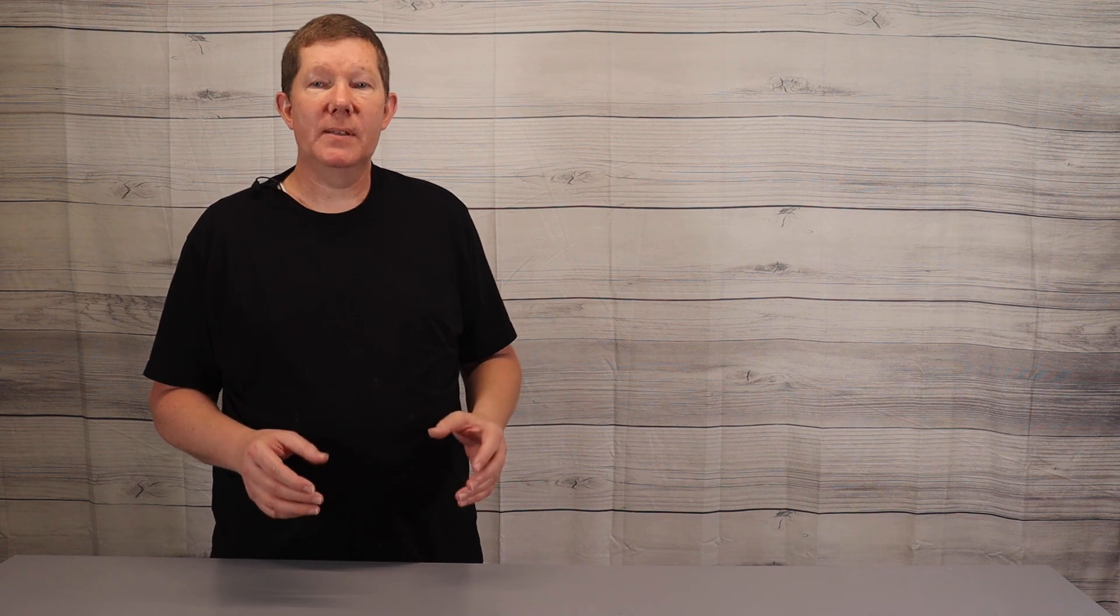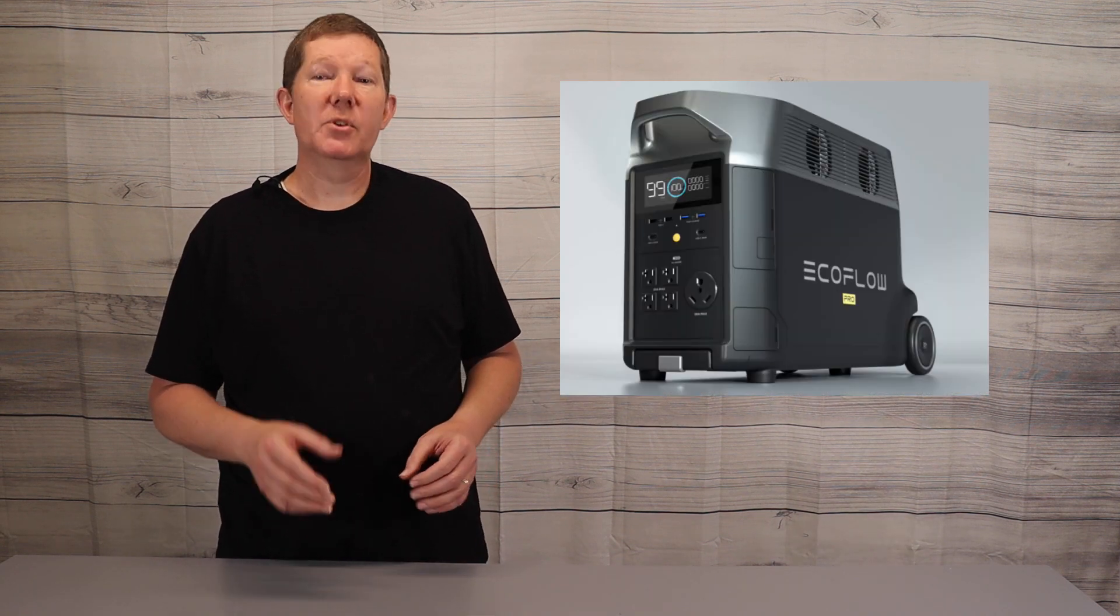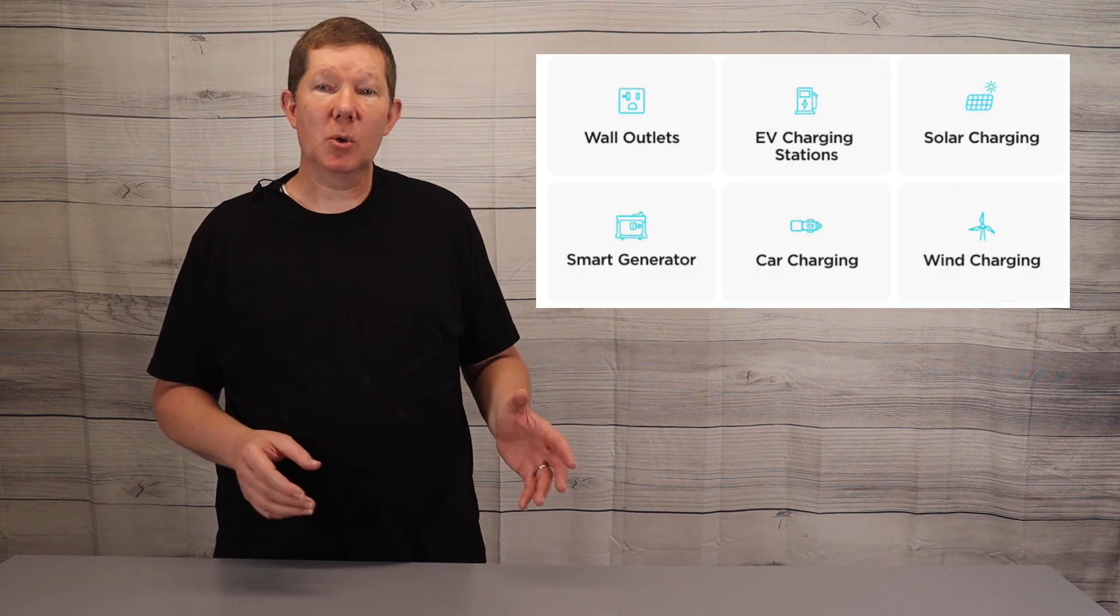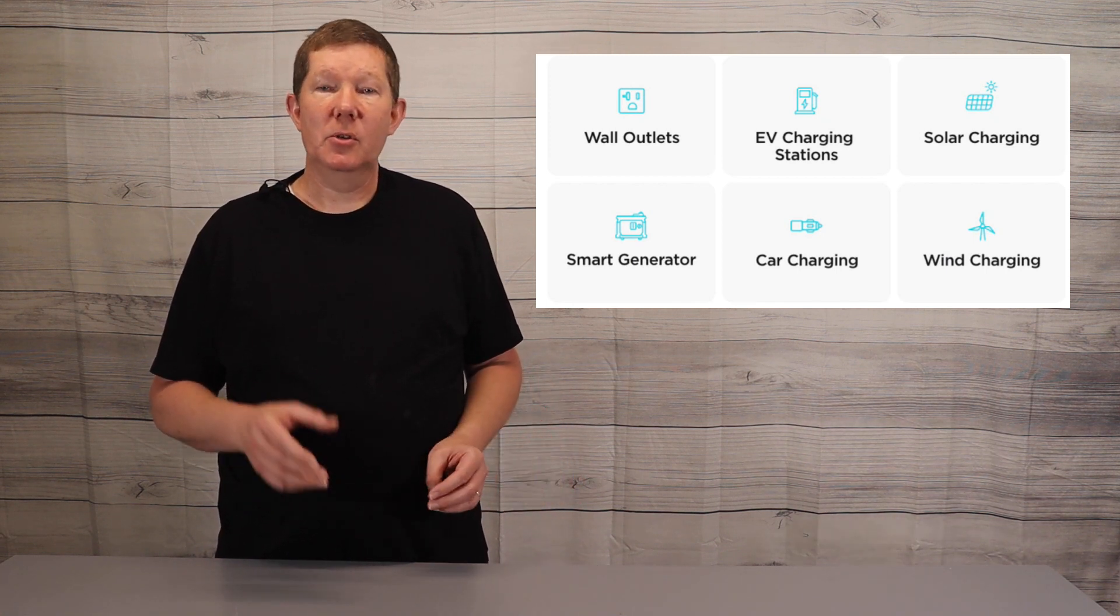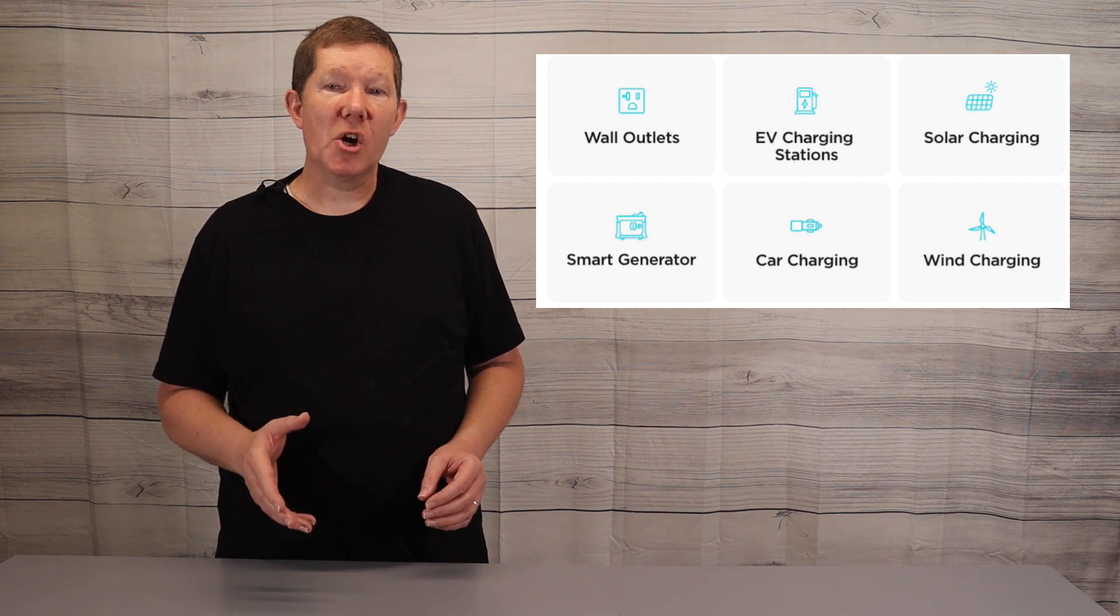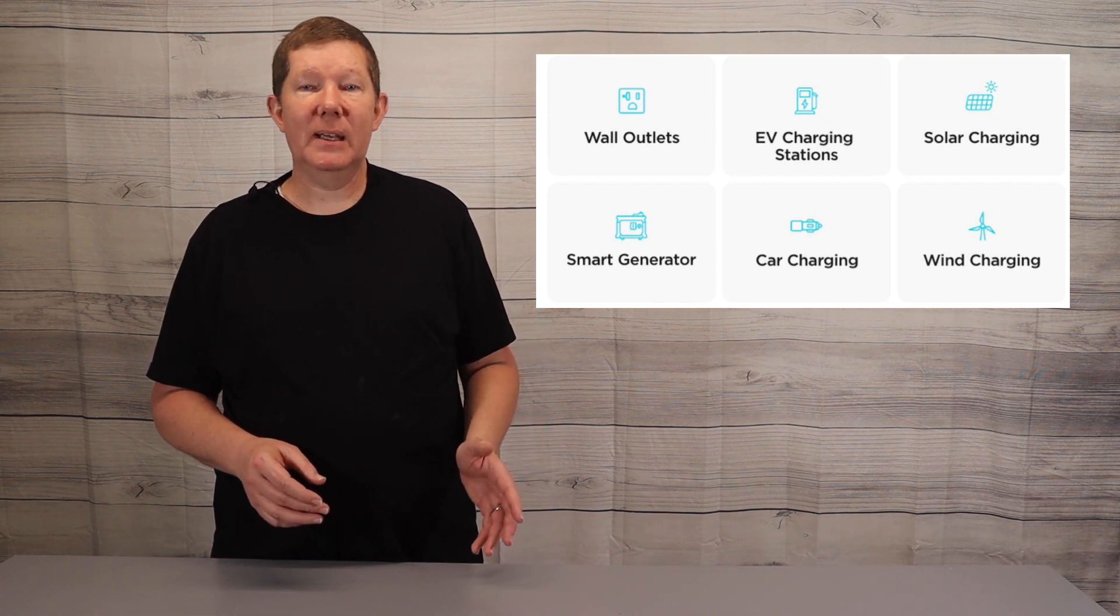So let's take a look at the components that I purchased that's going to make up my solar system. First, the main unit is called the Delta Pro. It's a 3.6 kilowatt system, which is expandable to 25 kilowatts if you connect two Delta Pros and some additional batteries. What I like about this is that it has Flow Charge, the world's fastest charging system. You can use solar, you can use wind, you can use your AC wall outlet, you can use your DC car charger from your car. You can even take it to an electric vehicle charging station, plug it in and charge it.